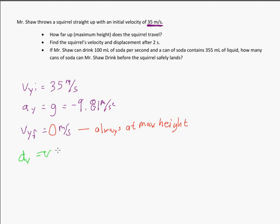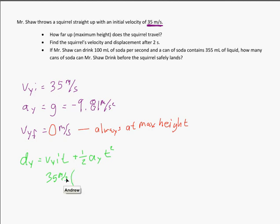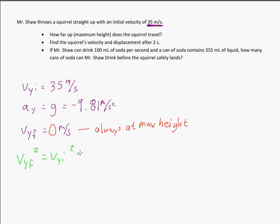We start with DY equals VYI·T plus ½·AY·T². But we don't have time, so we can't use this formula. Instead, we use VYF² equals VYI² plus 2·AY·D. You're going to use this formula and solve for the distance. That's how you solve for the first bullet point.